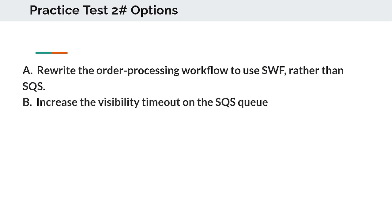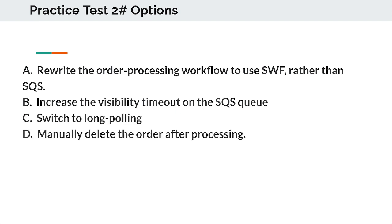Option B: Increase the visibility timeout on the SQS queue. Option C: Switch to long polling. Option D: Manually delete the order after processing.